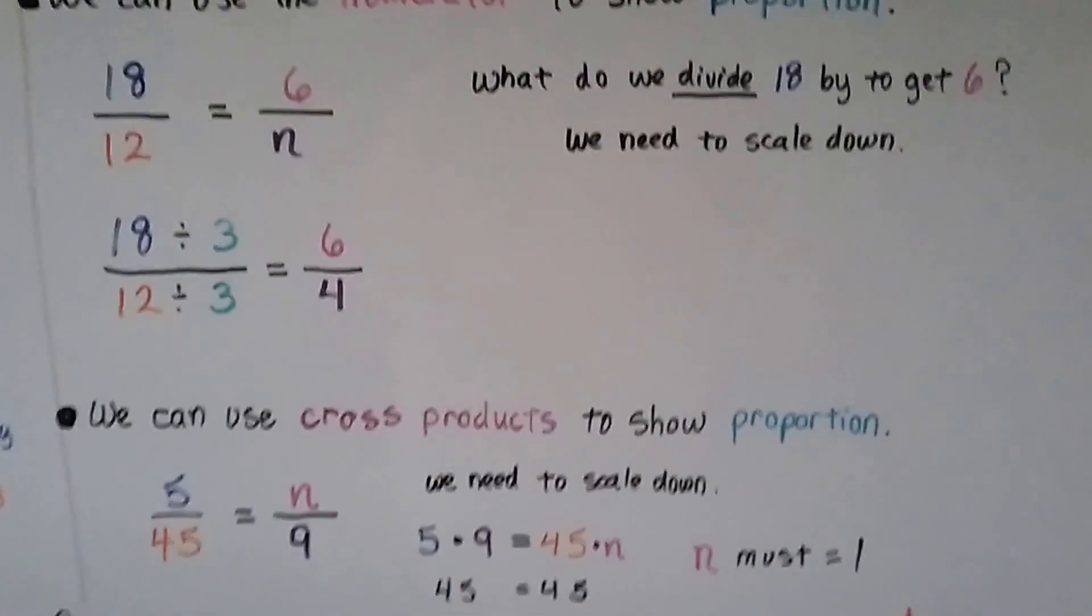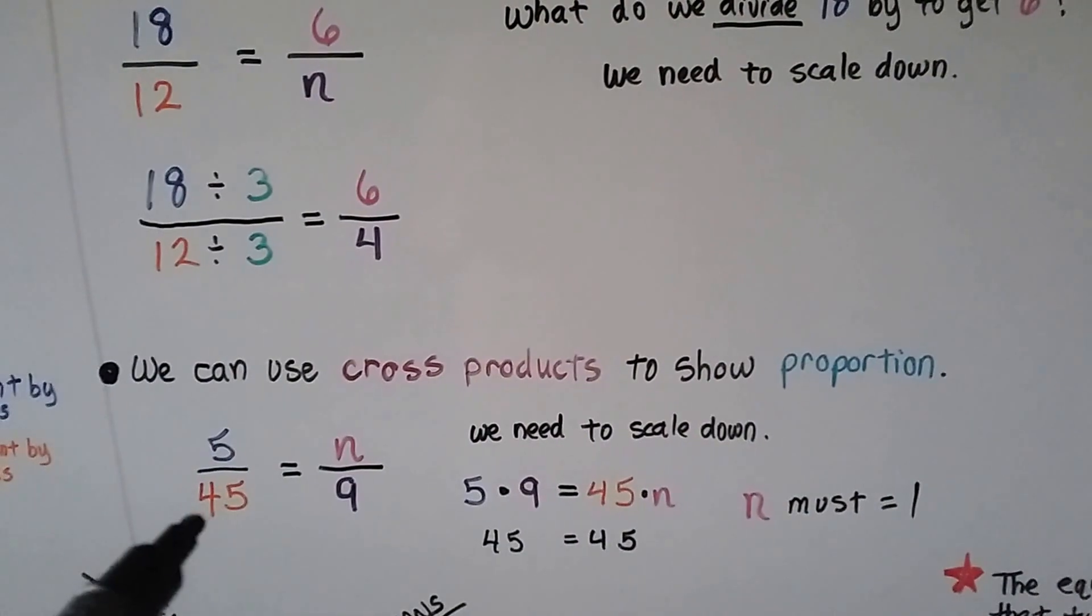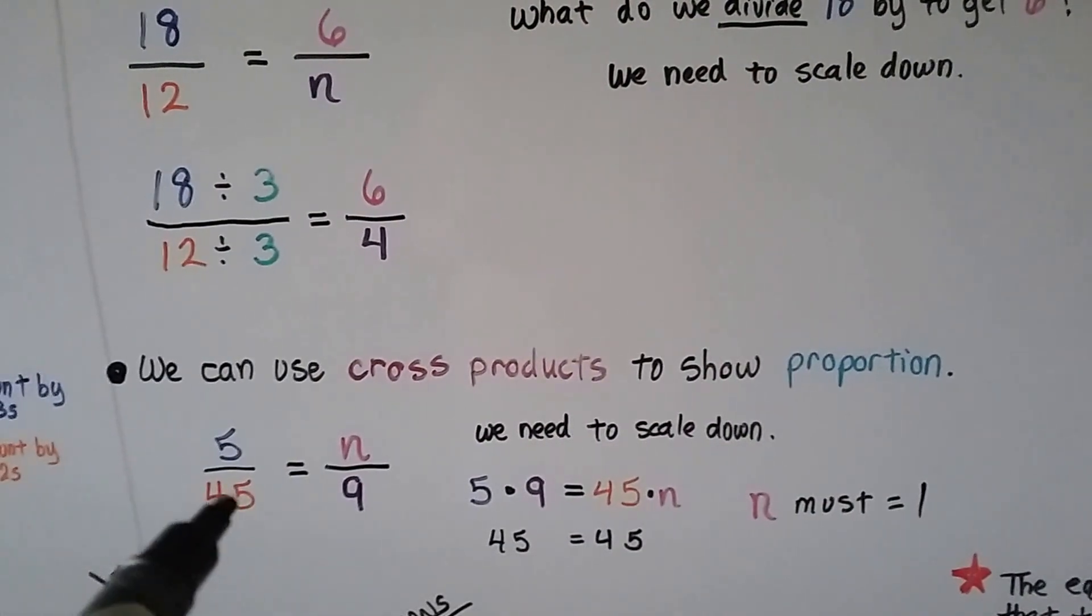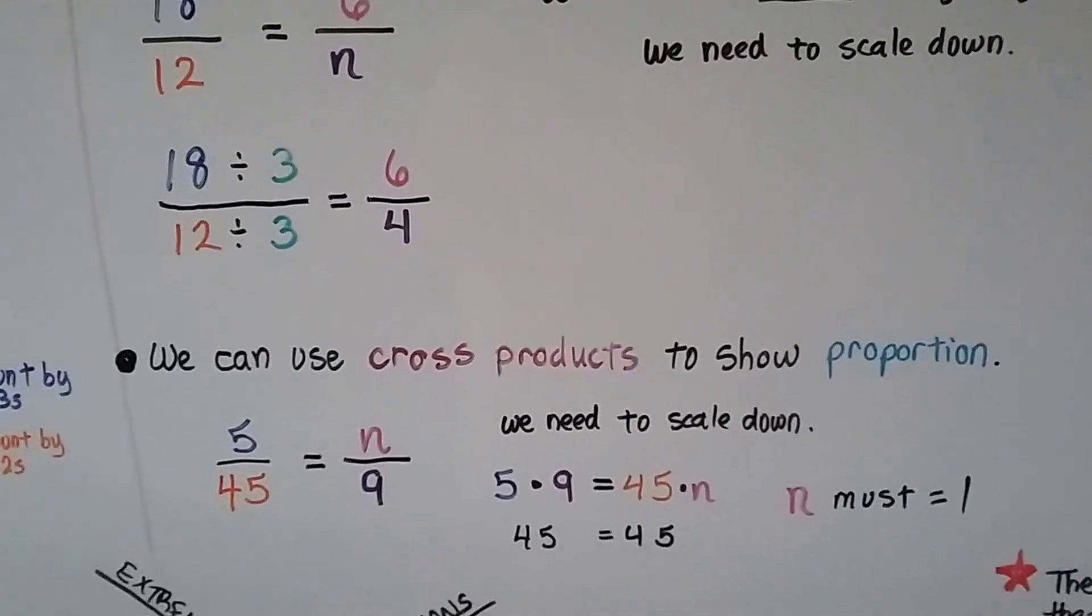We can use cross products to show proportion. We can do 5 times 9, which is 45. It has to equal 45 times something. Well, that would be a 1, so n must equal 1.